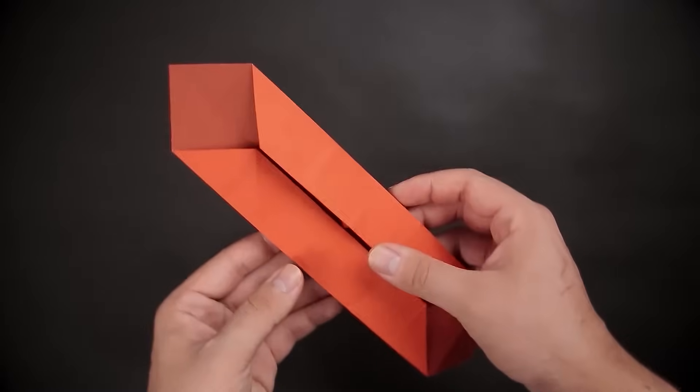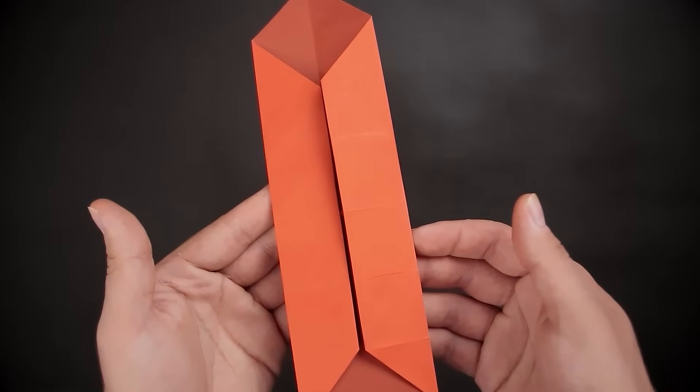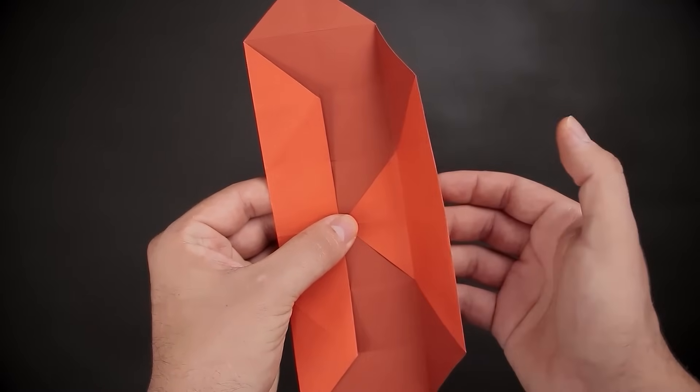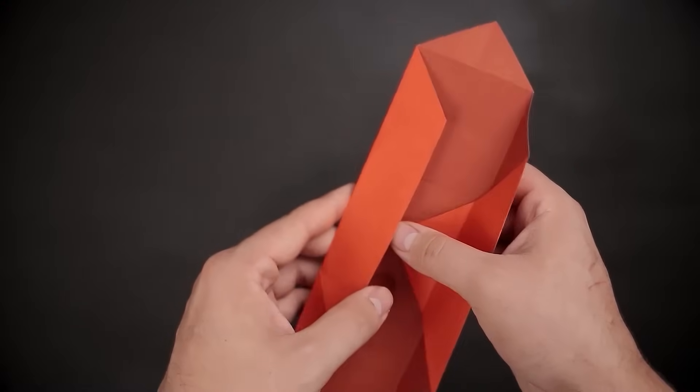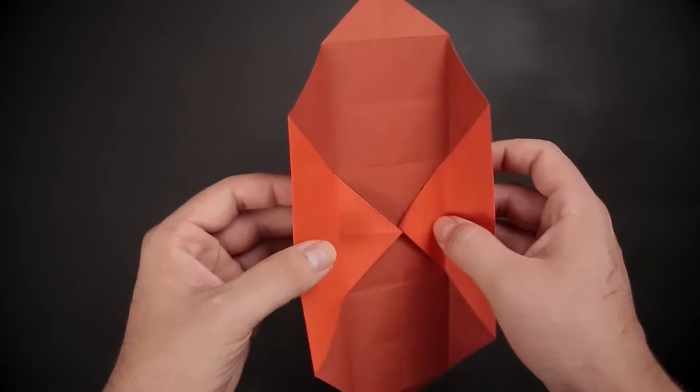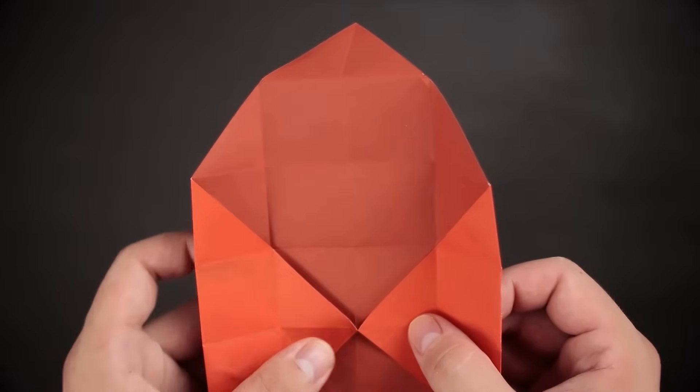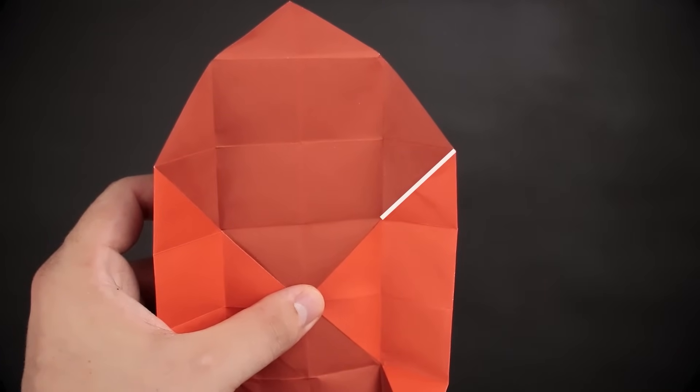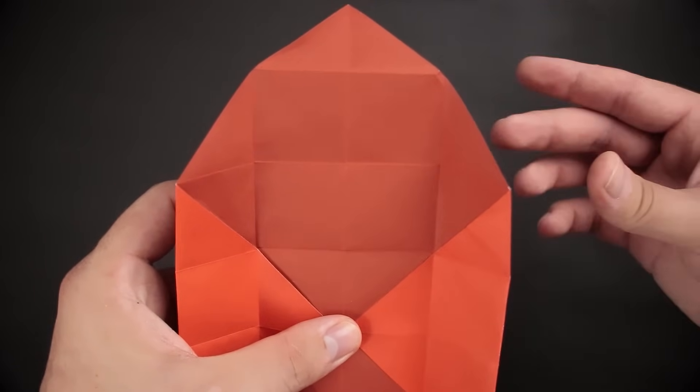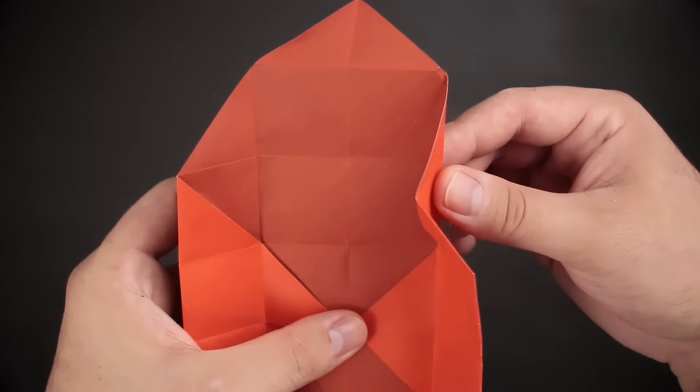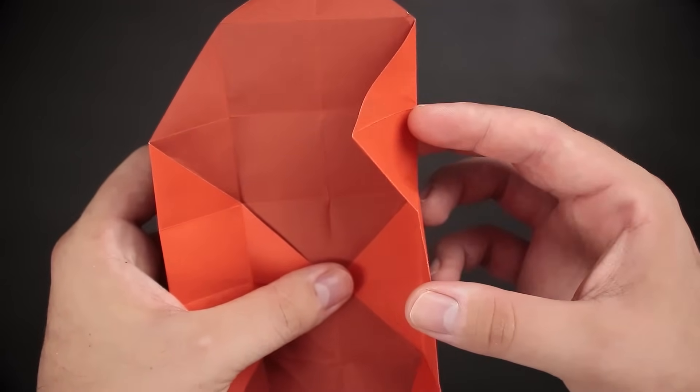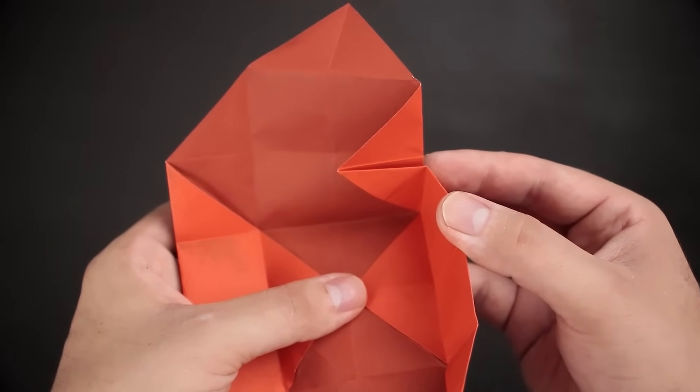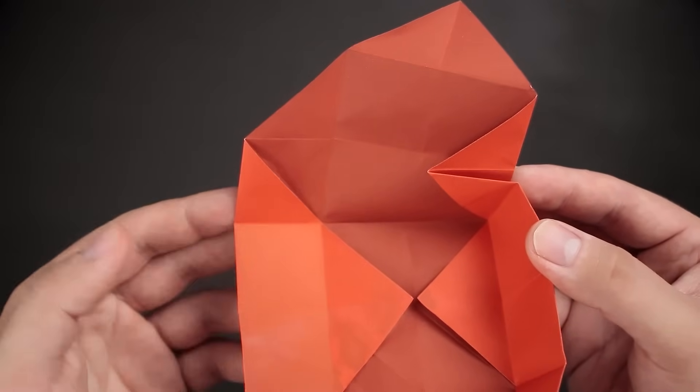For the next step, we will hold the paper in this position. Open it up just a little bit. And now, we're going to have to close the top side using this little diagonal here. So, just close the paper to the side, like this. Then, the same on the left.